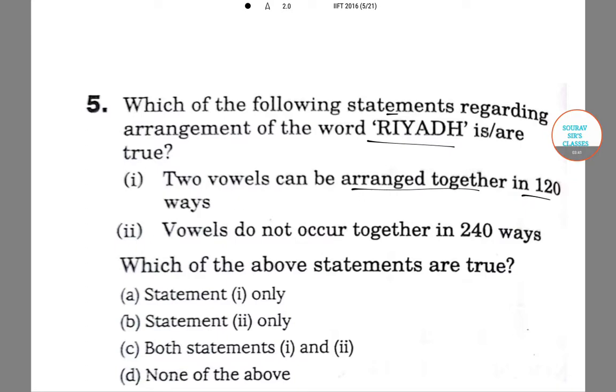So the two vowels can be arranged together. Consider the vowels I and A to be a single unit. And then what we are left with is R, Y, D and H. So we have 5 units in total.